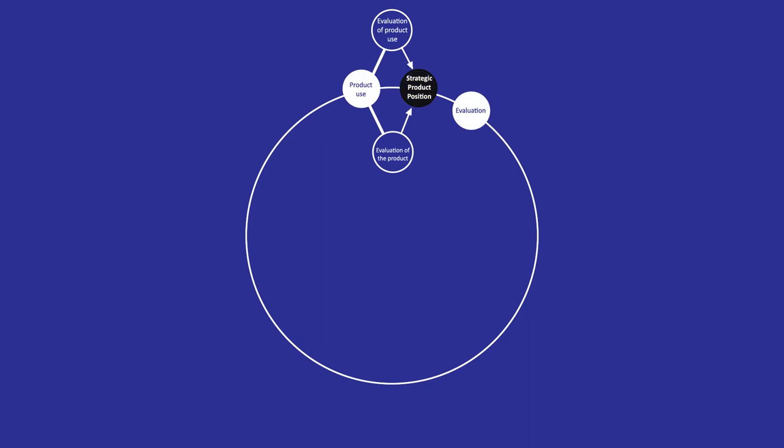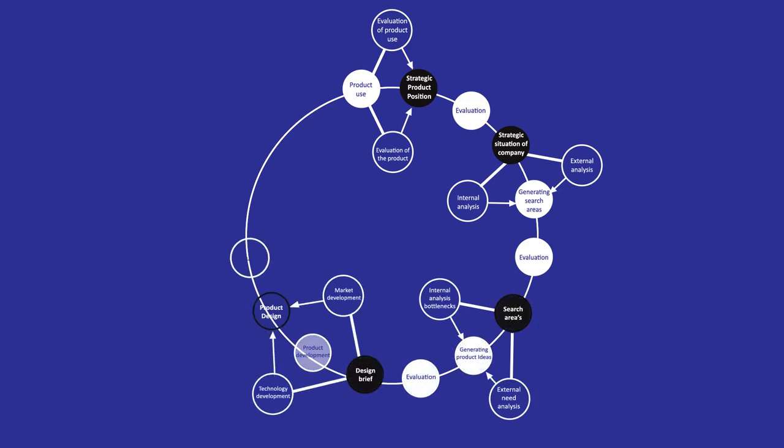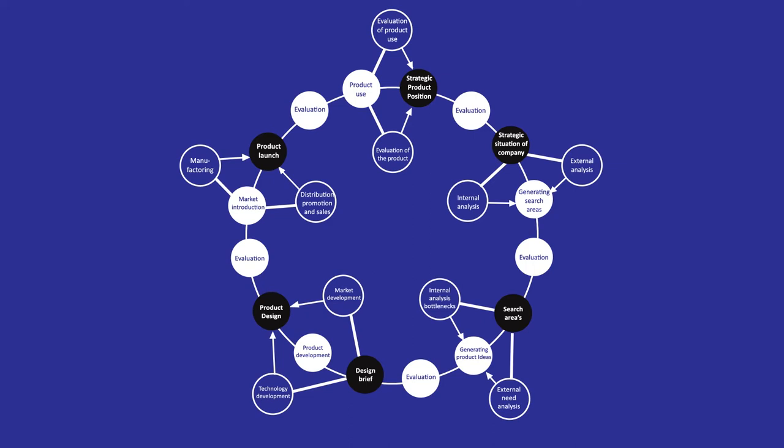The basic idea behind this model is that product design starts with the identification of interesting needs in the marketplace by the company. The designers of the company transform these needs into a primitive idea of a future new product. In each stage this idea is progressed from idea to sketch, from sketch to concept, from concept to prototype and finally from prototype to production model. This production model will be sold on the market to fulfill that earlier identified need, or to realize that earlier formulated opportunity.